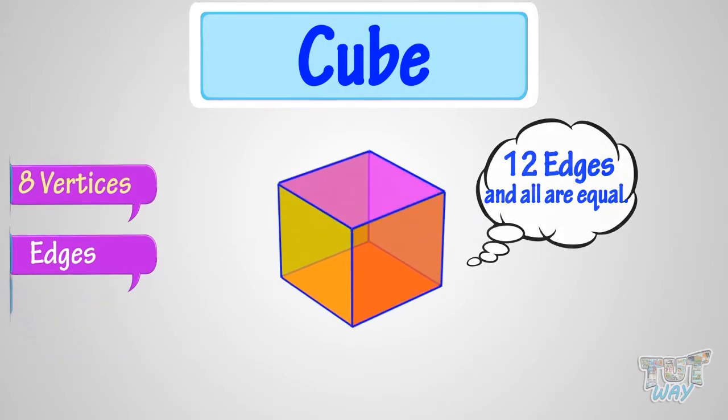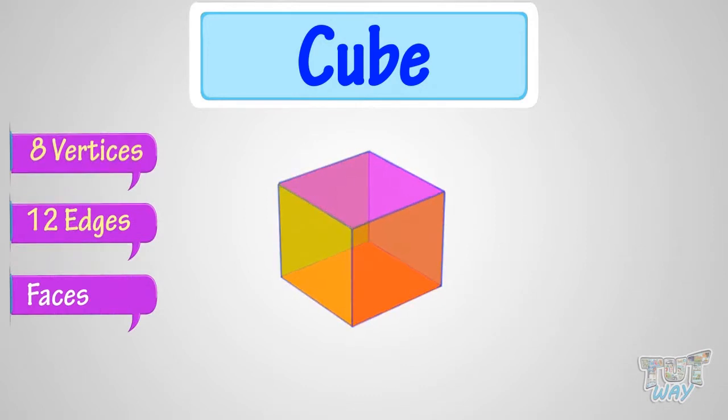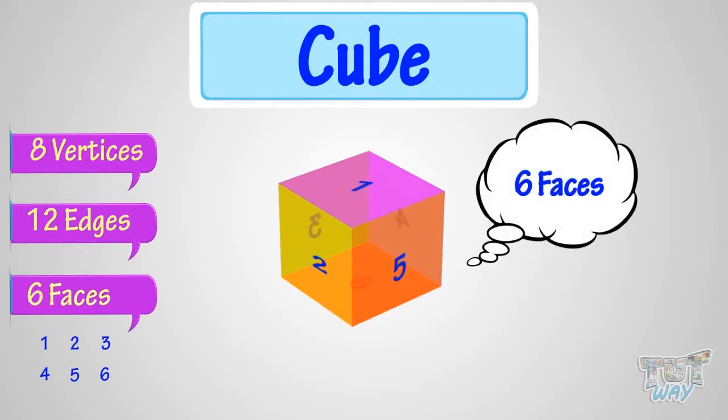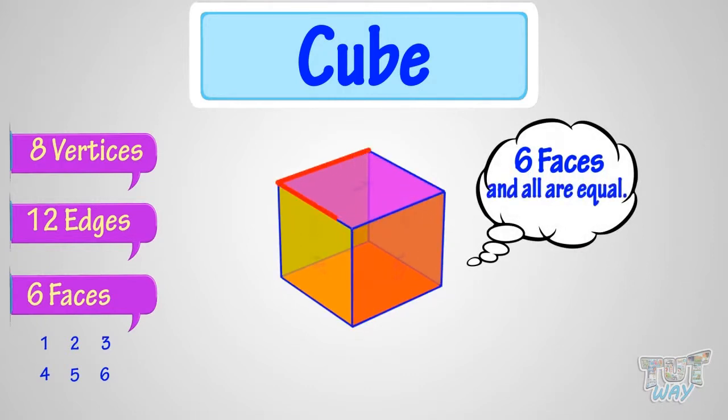Now let's count its faces. One, two, three, four, five, six. So, a cube has six faces, which are all equal and square in shape.